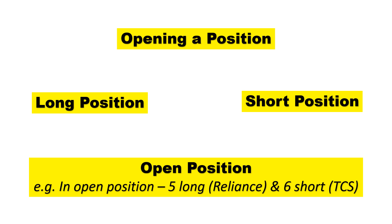For example, if you hold a long position in a Reliance Industry Limited contract and sell a DCS contract, you have a short position — resulting in five long and six short open positions.